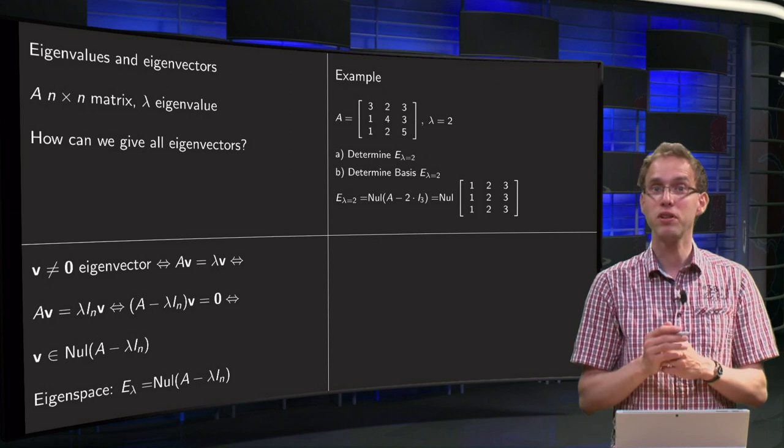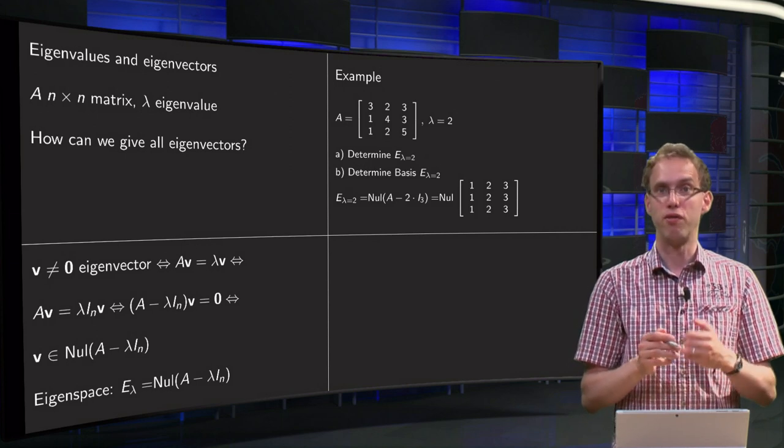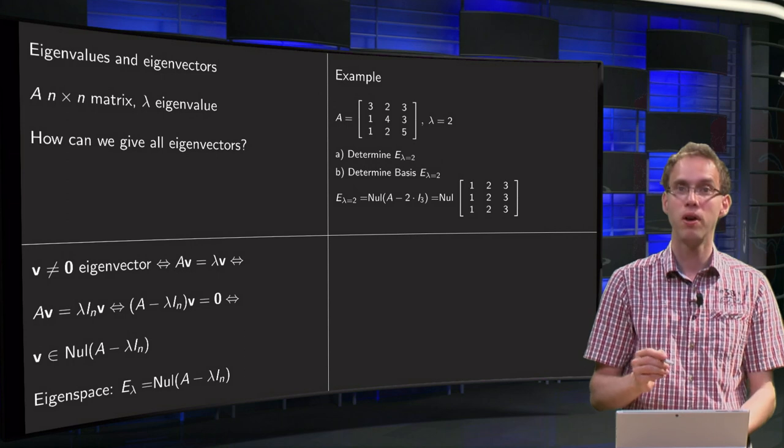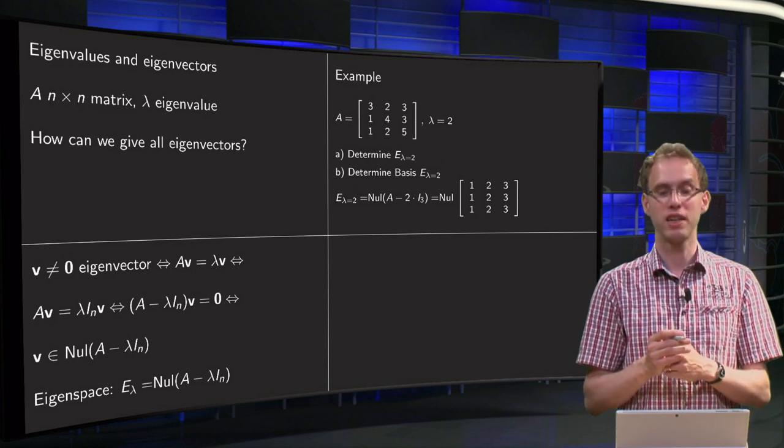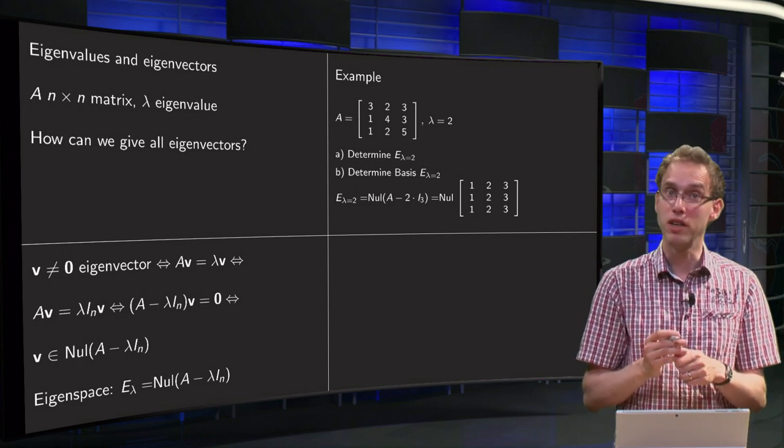So how do we compute it? Let's do an example. We have a matrix, we have given an eigenvalue lambda equals 2. First question, determine the eigenspace, and second question, determine the basis for the eigenspace.